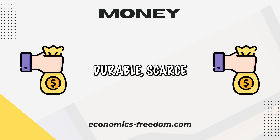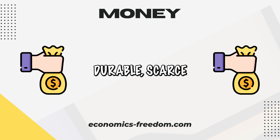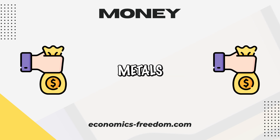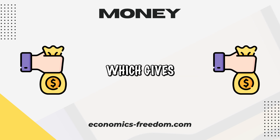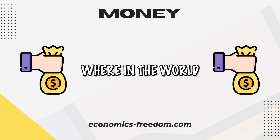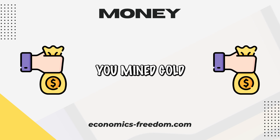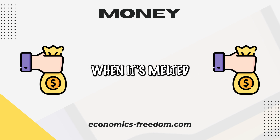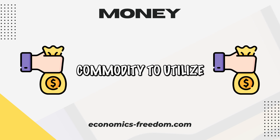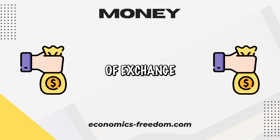Gold and silver are divisible, durable, scarce, and fungible, and most of all, everyone wants these precious metals. There will always be demand for gold and silver, which gives them value. One ounce of gold is exactly the same as any other ounce of gold — no matter where in the world you mine it, when it's melted down it's all the same. That makes precious metals the perfect commodity to utilize as a medium of exchange, both domestically and globally.